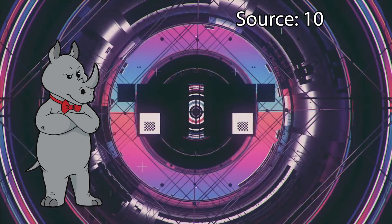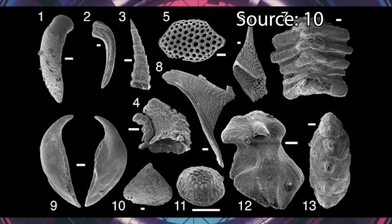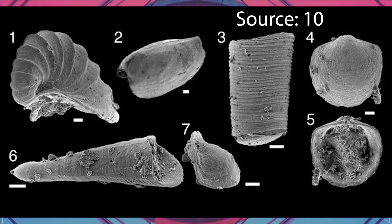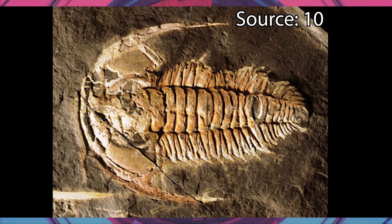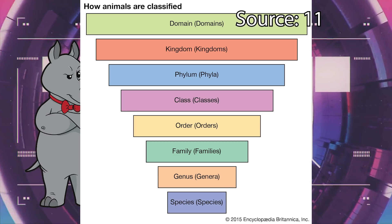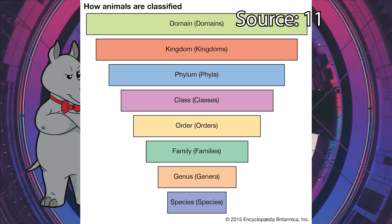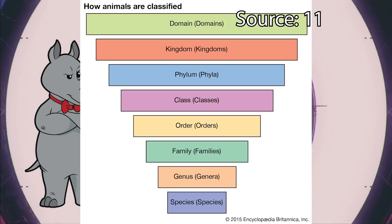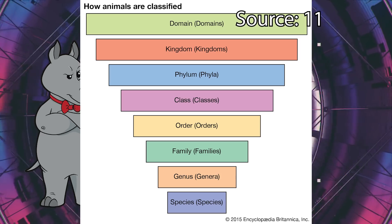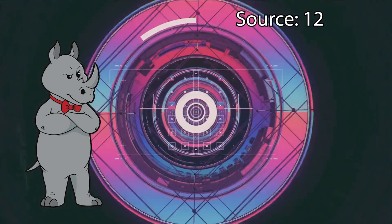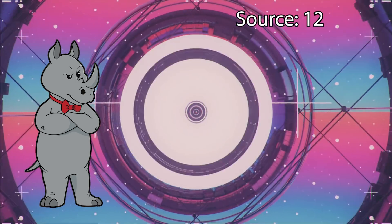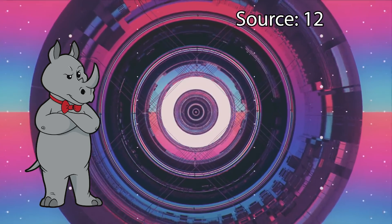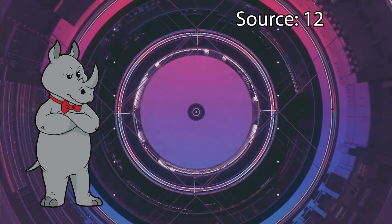The beginning of the Cambrian shows a massive diversification of life. This is when we see the appearance of almost every major animal phyla — the highest level in Linnaean taxonomy before you get to the kingdom level, with kingdom being the division between animals, plants, fungi, protists, and monera. Most major animal phyla make their first appearance here, but they would have looked very different from the members of those phyla that we see today.